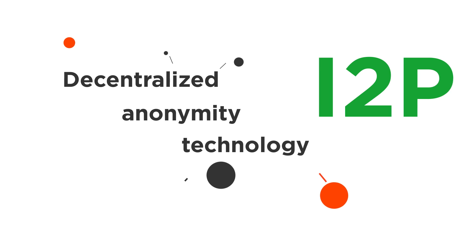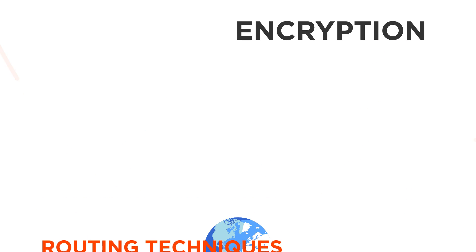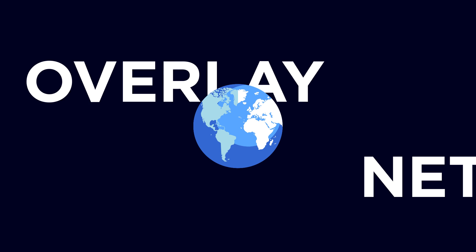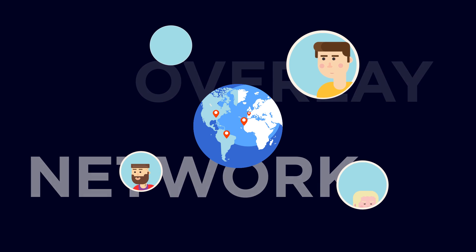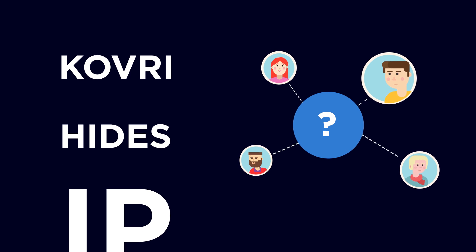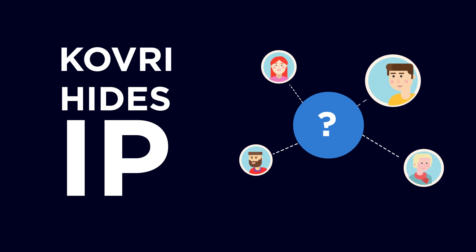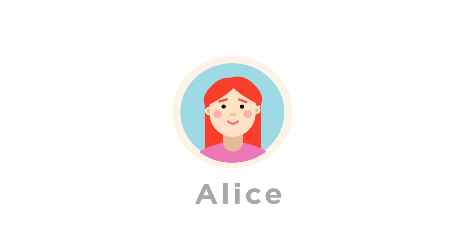Kovri is a free, decentralized anonymity technology based on I2P's open specifications. Kovri uses both encryption and sophisticated routing techniques to create a private overlay network across the Internet. This protected overlay allows users to hide their geographical location and IP address. An IP address is like a home address for the Internet, so this is quite sensitive information to say the least. Let's go through a few scenarios to see how this lightweight, security-focused software helps strengthen a user's privacy.